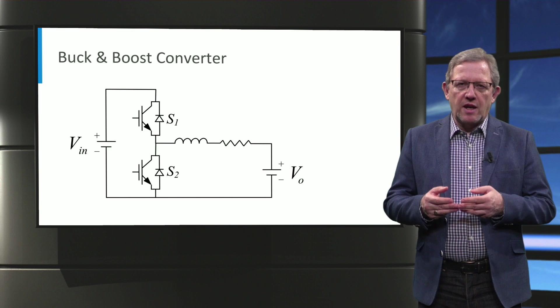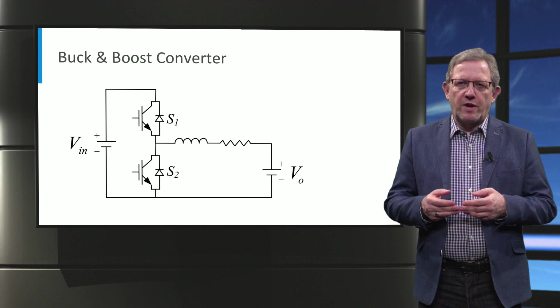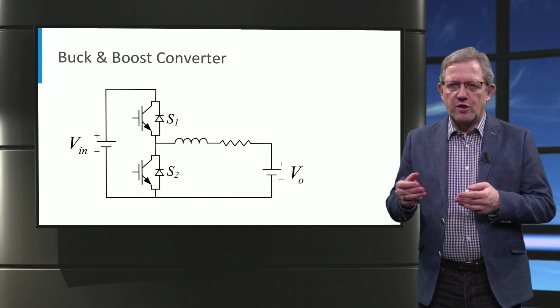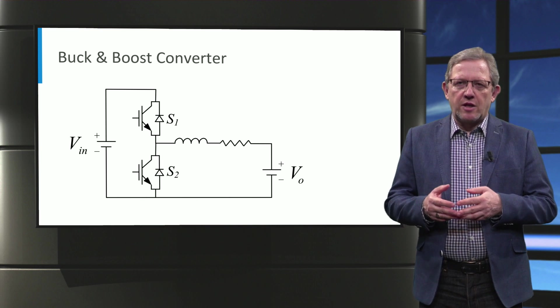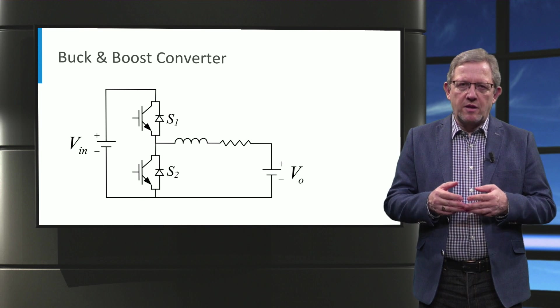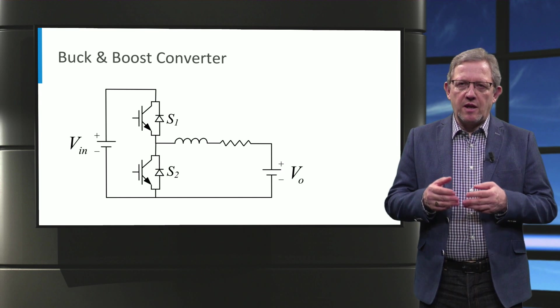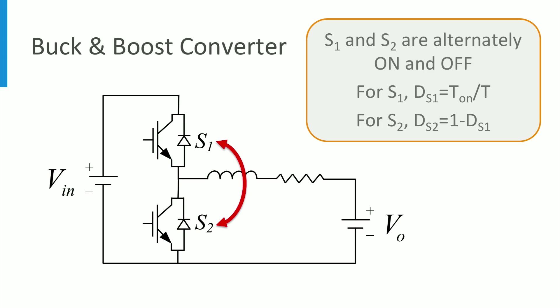Here we analyze in detail the operation of the buck and boost converter. This converter should be able to transfer power from the higher voltage V_in to the lower voltage V_0 and also vice versa. As it can be seen, the two switches S1 and S2 are connected across the DC voltage source V_in. Here, each switch consists of an IGBT with an antiparallel diode.